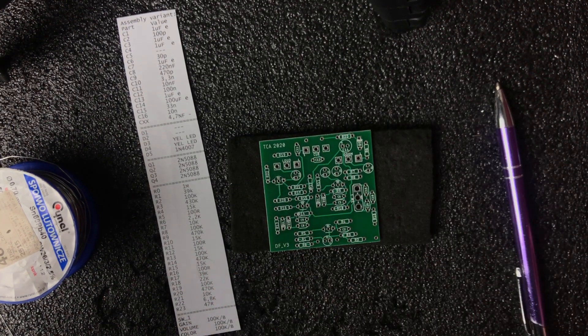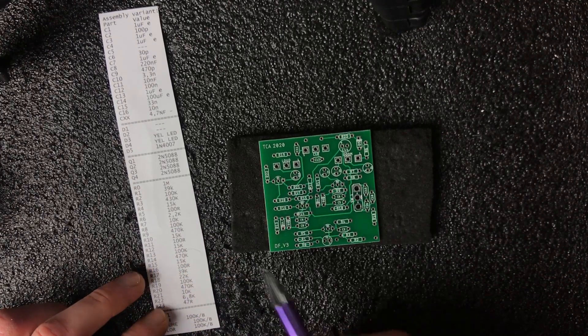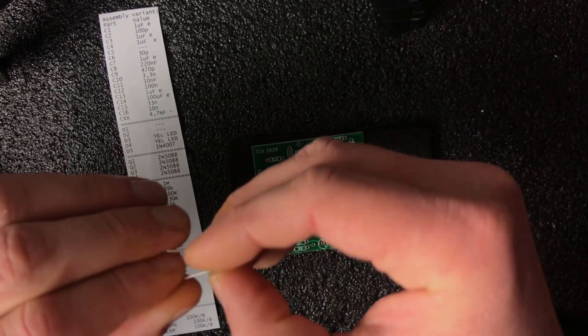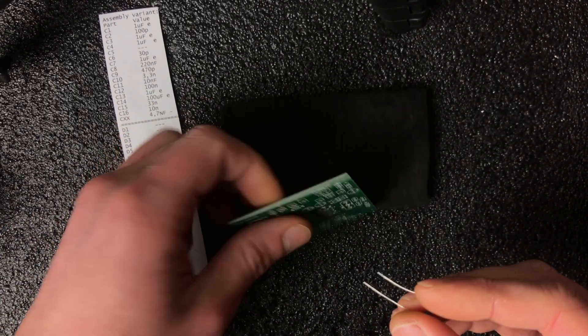So first I suggest to solder smaller parts so we will start with resistors. As you see R0 it's one mega. You need to find R0 on PCB, bend the legs, put them into holes and solder it.